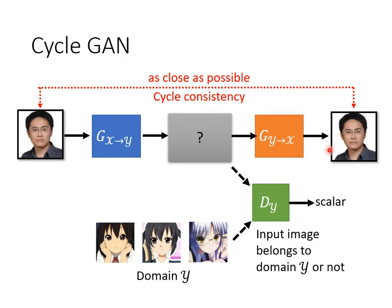So now we have three networks. The first generator converts from X to Y, the second generator converts from Y to X, and the discriminator's job is to determine whether the output of the first generator looks like a picture in the Y-domain. What is the difference after adding the second generator from Y to X?